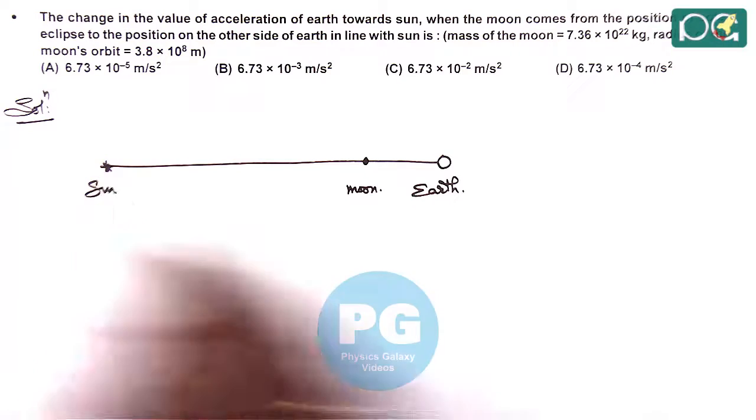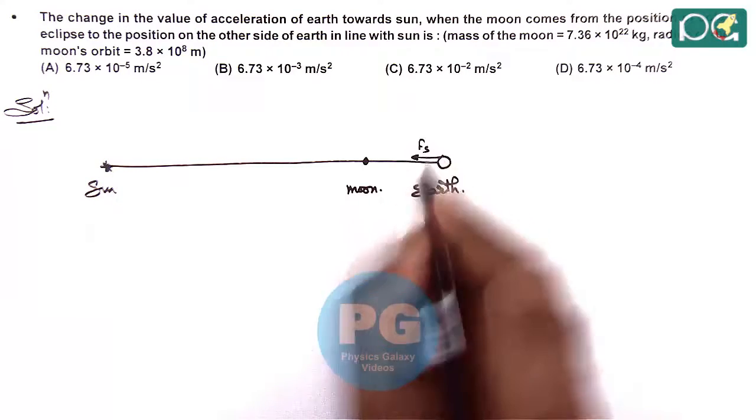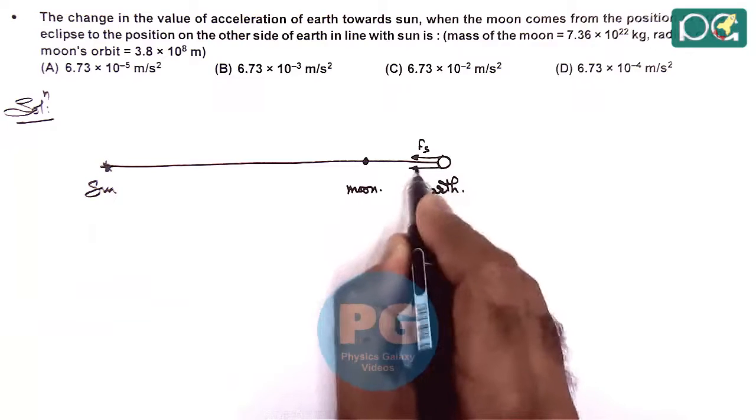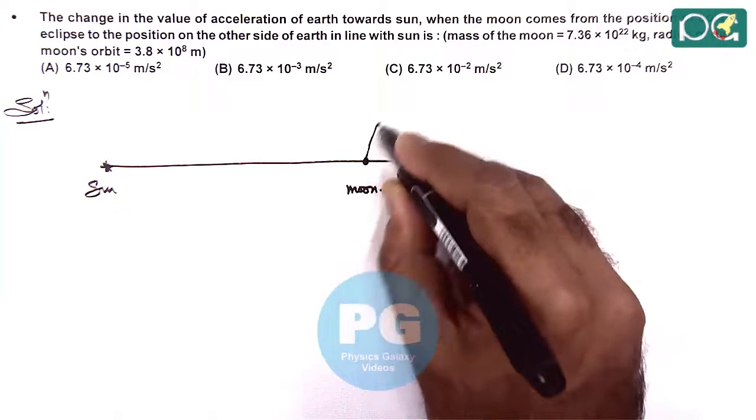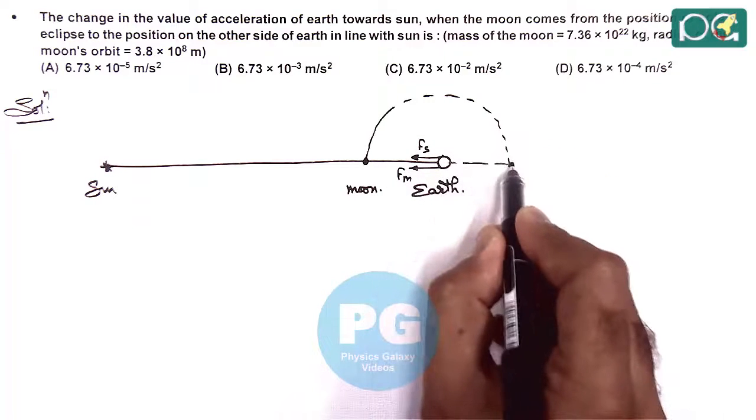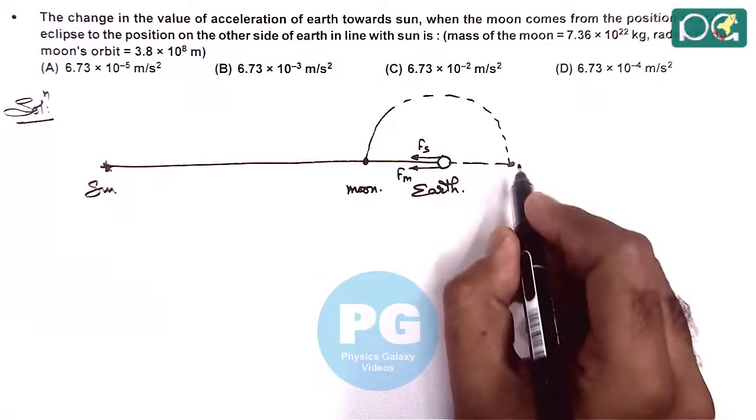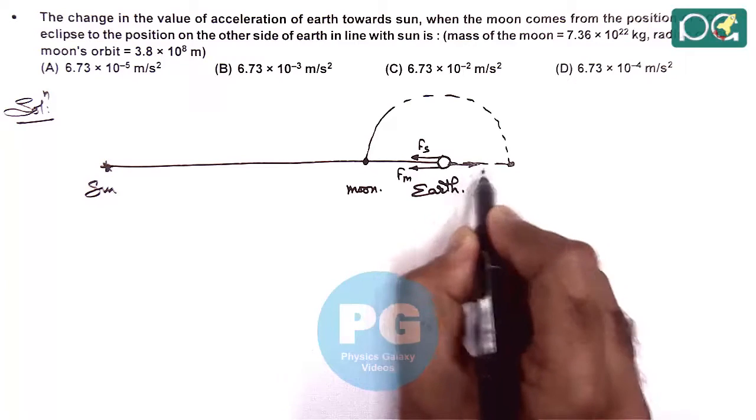So in this state, sun is attracting earth toward it with the force Fs, and moon is attracting it with the force Fm. When the moon reaches to the other side of the earth in line with the sun and earth, now in this situation the force applied by moon on earth will be in opposite direction.